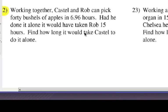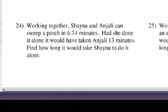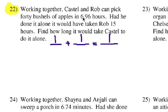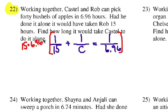Alright, let's look at number 22. Working together, Castell and Rob can pick 40 bushels of apples in 6.96 hours. So together, that would go over here. Had he done it alone, it would have taken Rob 15 hours. So we're going to make this first fraction represent Rob's work, 1 over 15. How long would it take Castell to do it alone? Well, it's probably a good idea to use C for Castell or you can use X either way. To get rid of the fractions, we're going to multiply everything by all of those denominators. So it's going to be 15 times 6.96 times C.